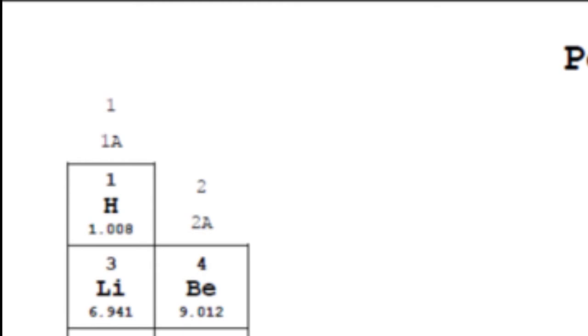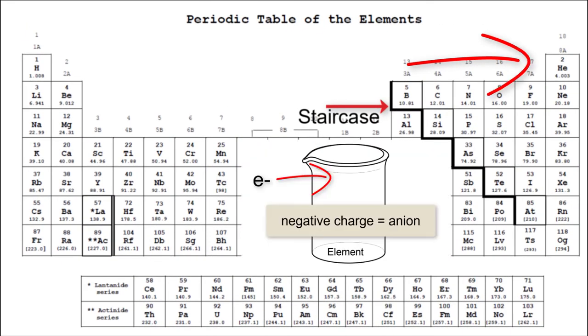And everything to the right of the staircase in this direction are our nonmetals and they're going to be our anions.